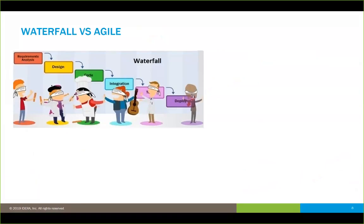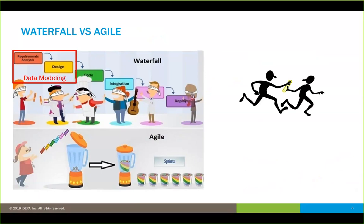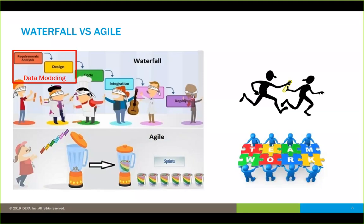To contrast waterfall versus agile briefly: waterfall is that phased approach — requirements, design, coding, integration — where one activity happens and you pass the baton for the next to commence. Whereas agile has a lot of these things going on simultaneously in smaller cycles, like throwing everything into a blender and breaking it up into multiple sprints. There's a heavy reliance on teamwork, whereas waterfall could run the risk of doing a handoff without communication. The real emphasis in agile is communication amongst the teams.